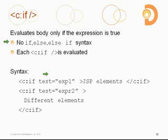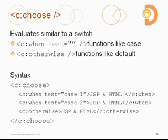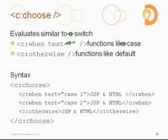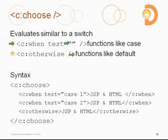Instead of having a big list of if conditions, the second way to deal with conditional logic is through the use of a choose. The choose tag functionally works like a switch. Within a Java switch, I define cases, and for each case, I specify some value, and of course there is some default case. When dealing with the choose, the way that I define a case is through the use of a sub-tag called 'when', specifying the Boolean expression for my test.